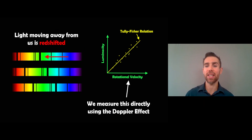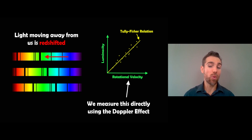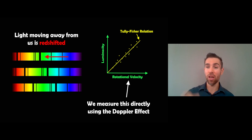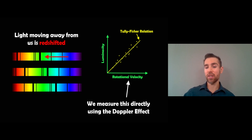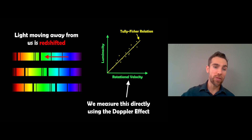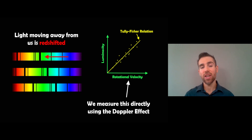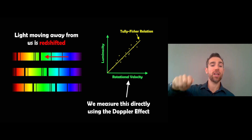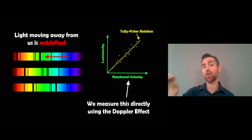How do we actually get the rotational velocity as a measurement? We can use this directly by using the Doppler effect — we measure the light coming from the galaxy. If we have the full galaxy, we can measure across the plane, and some of it will be traveling away from us and some towards us. Part of the galaxy as it's rotating is moving away from us, so that light will be redshifted — it means the light becomes slightly redder than it would be if it were stationary.